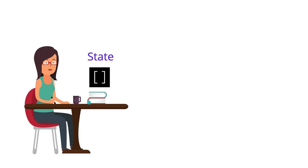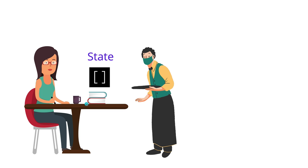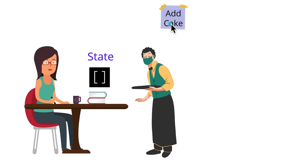The woman wants food, so she waits for the waiter. Once the waiter arrives, she tells him what she wants — let's say cake. The waiter writes that down on a piece of paper. The first word he writes is the action he wants to perform — 'add' — and the second word is what he wants to do it with — 'cake'. He could also write 'remove cake' or 'swap cake to croissant'. The first word is the action type, the second is the payload.